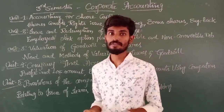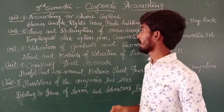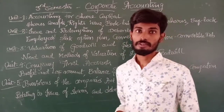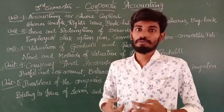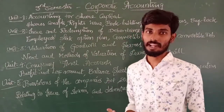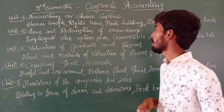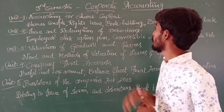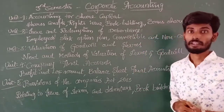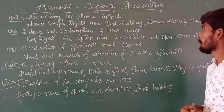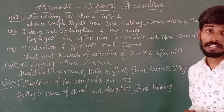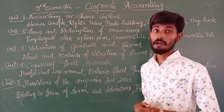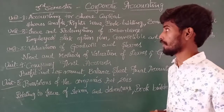These are the things we have to see. Then the second topic is rights issue — in which manner we have to issue the shares. Then book building process, and finally we have to see buy back of shares in the first unit.